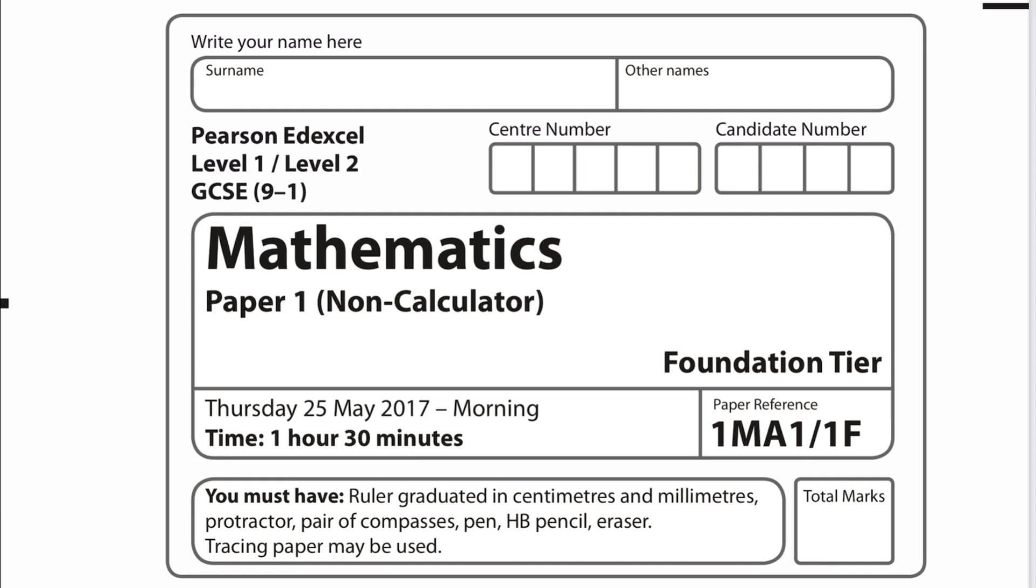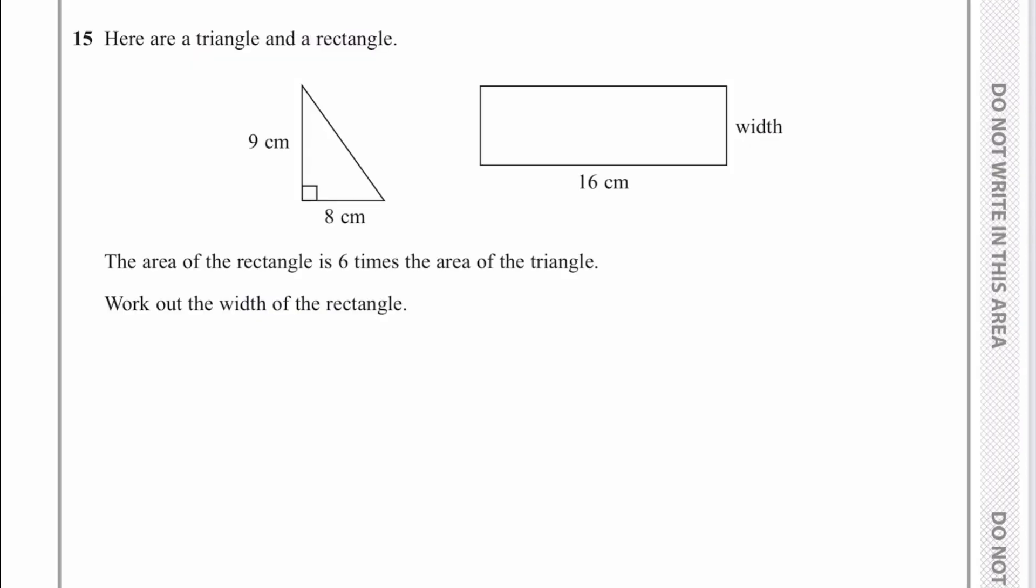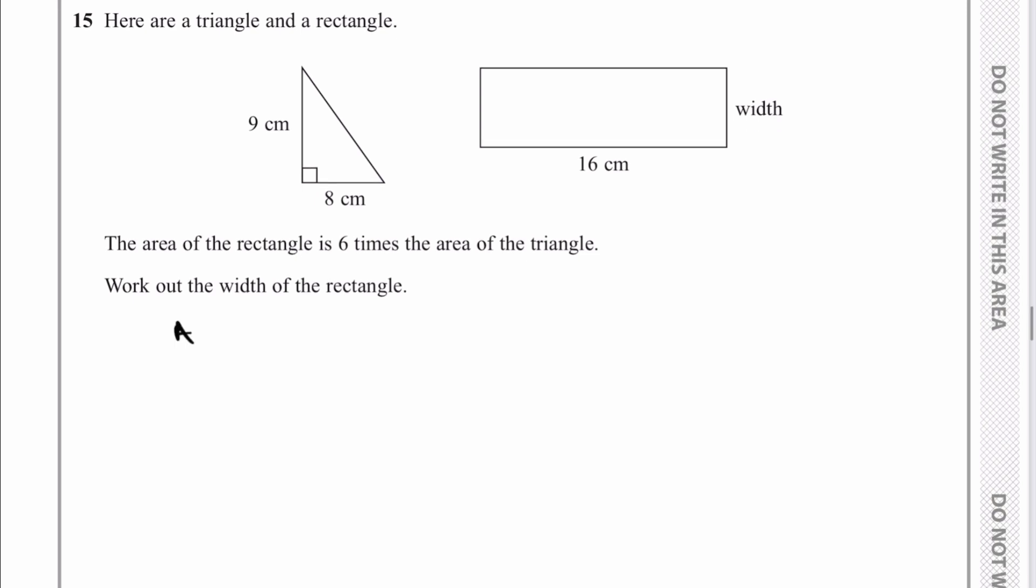In the previous video we completed through to question number 14. So in this video we're going to start from 15 onwards. Question number 15 here is a triangle and a rectangle. The area of the rectangle is six times the area of the triangle. So what we're going to do first is we're going to find the area of the triangle. The area of the triangle, some people write it as a half base times height, or you could write it as base times height divided by two. So if we look at the triangle, we've got a base of eight, a height of nine divided by two, and that's going to give us a total of 36 centimeters squared, which is the area of the triangle.